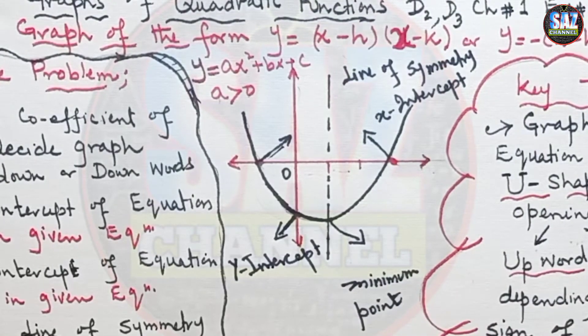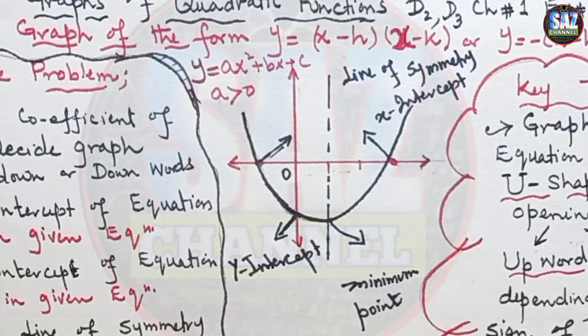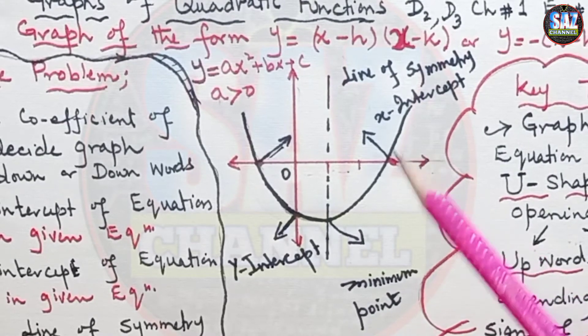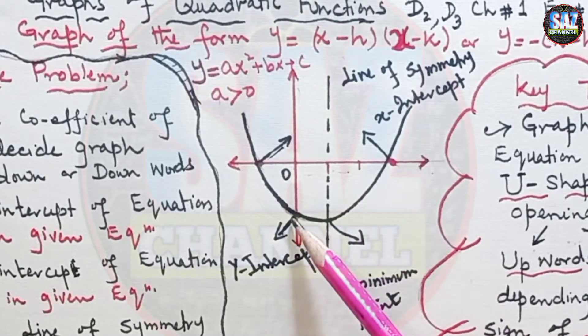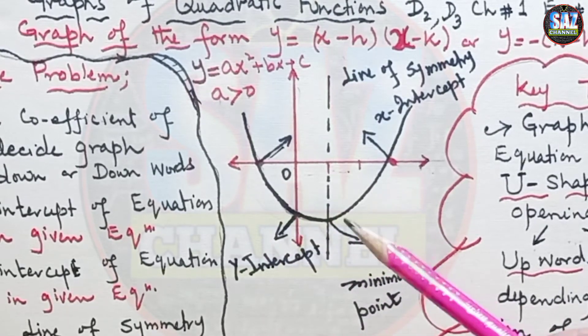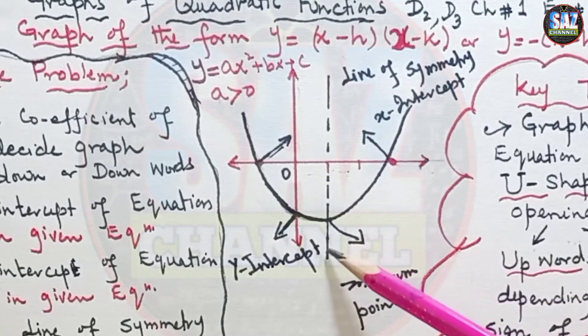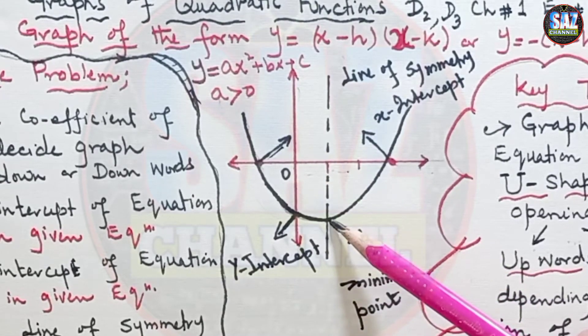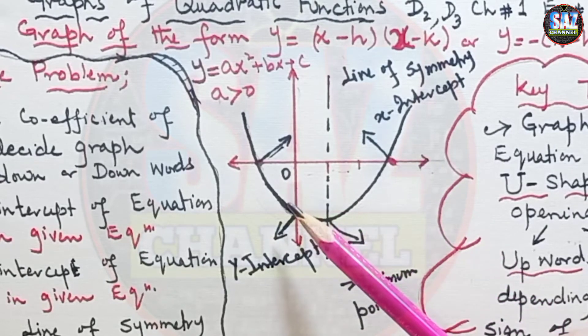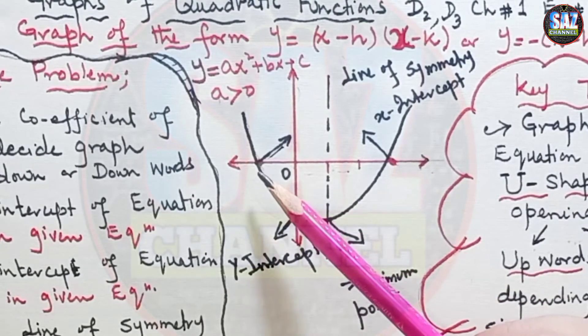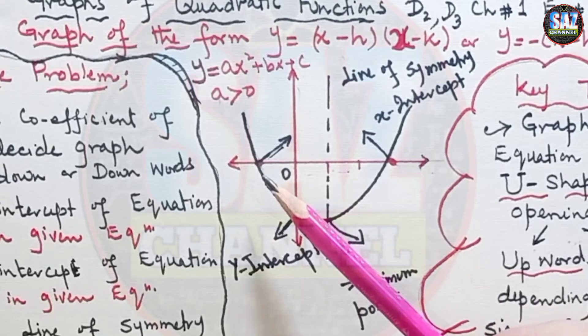So for the sketching of any parabolic curve or quadratic graph, we need at least how many points? X-intercepts, two points, and then y-intercept, this is the third point, and then equation of line of symmetry and the minimum turning point. I hope through this sketch you are clear that how to sketch the graph of the parabolic curve or the quadratic equation.